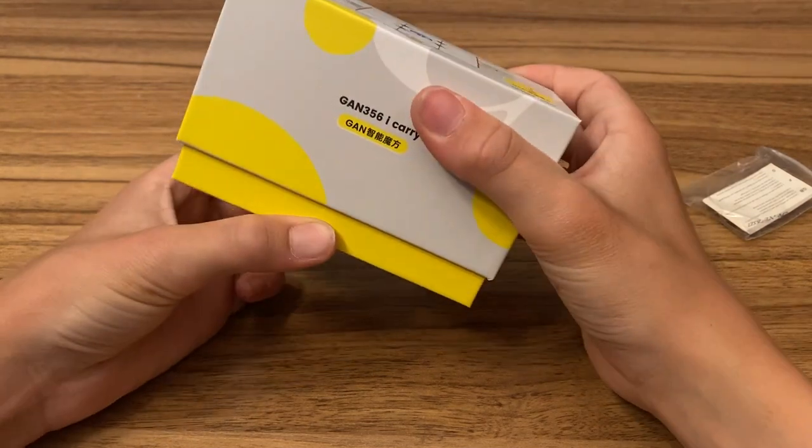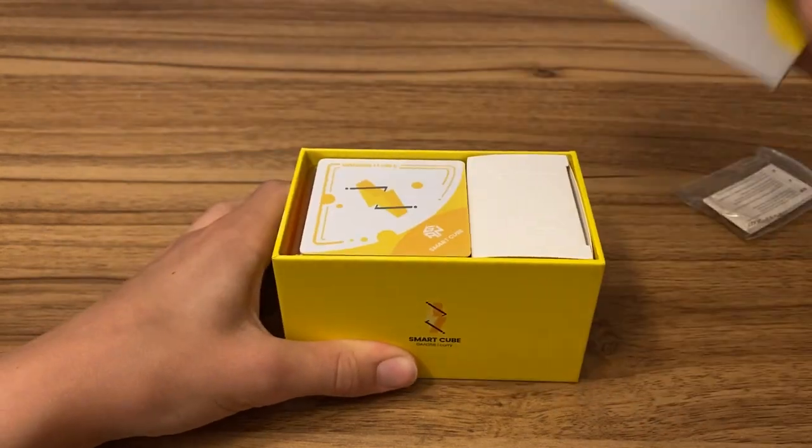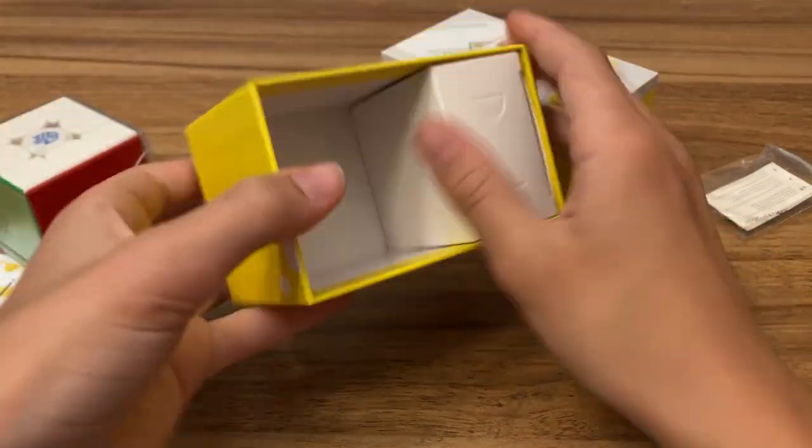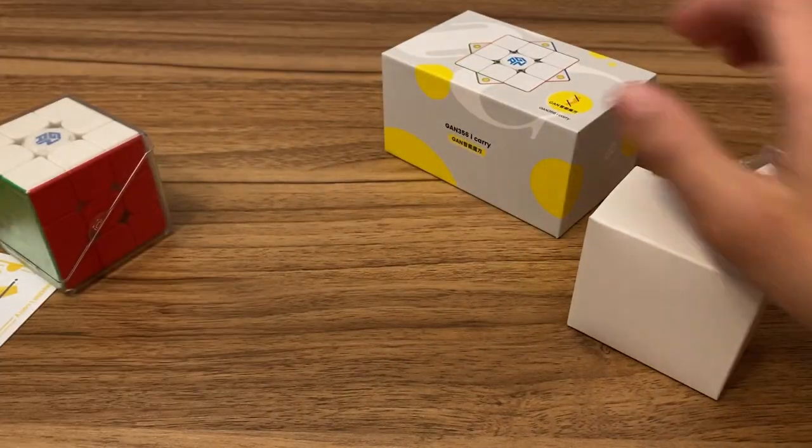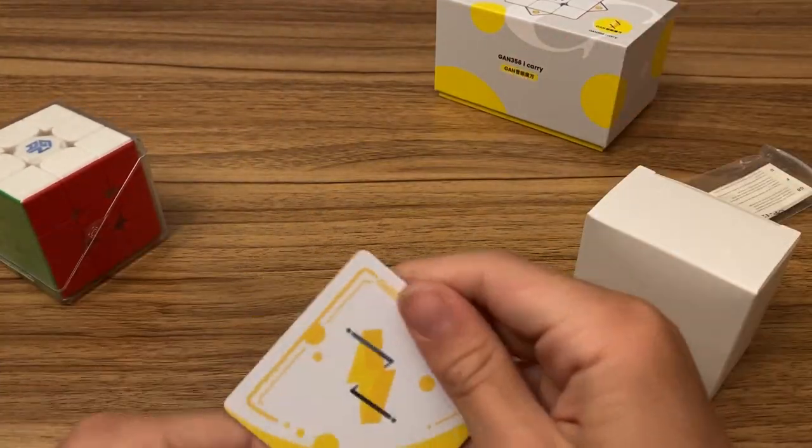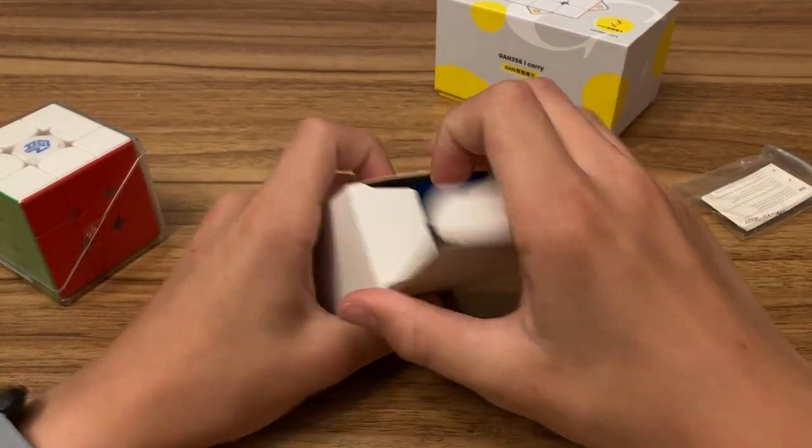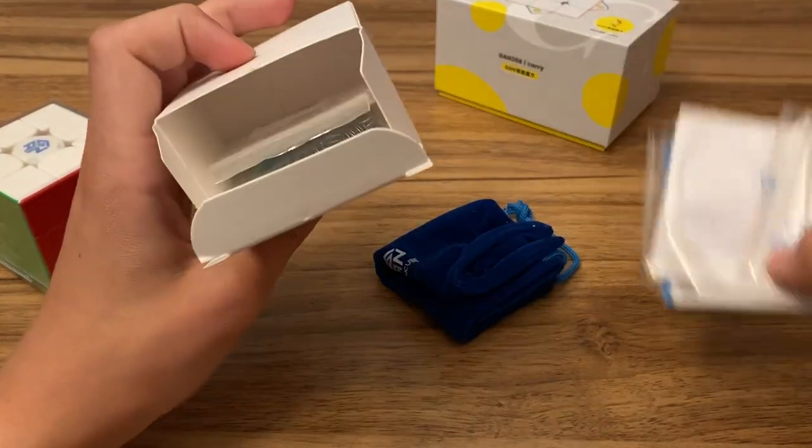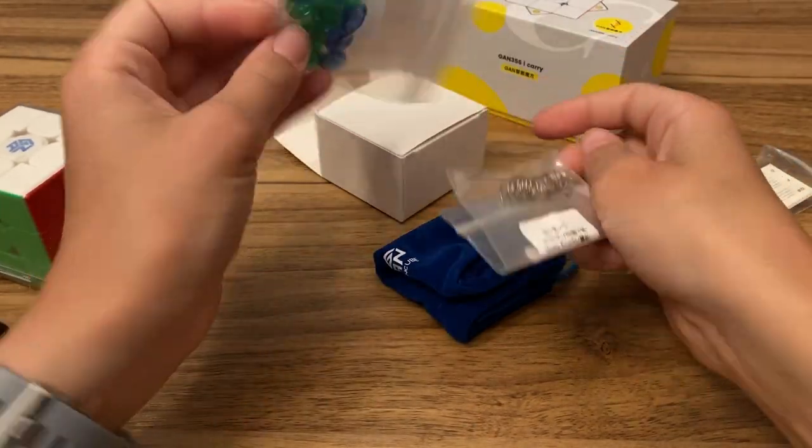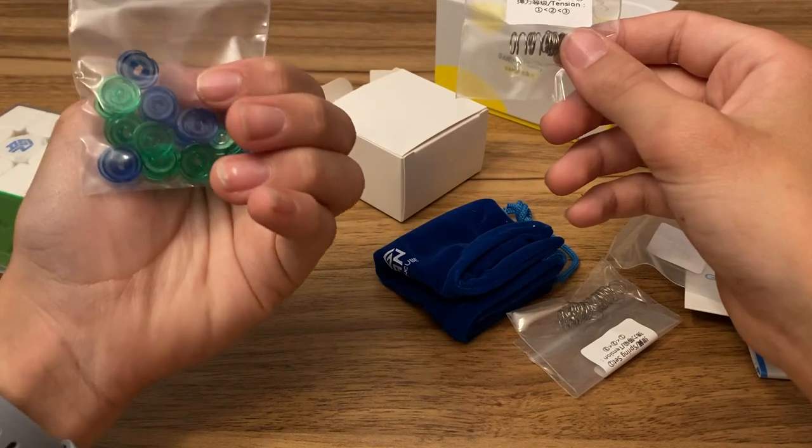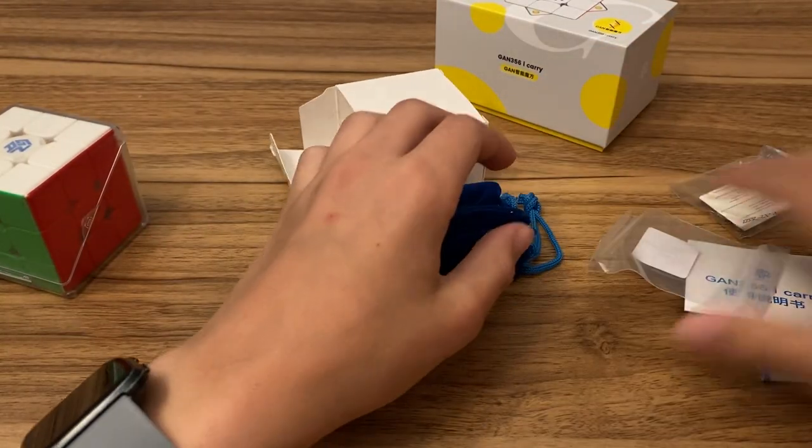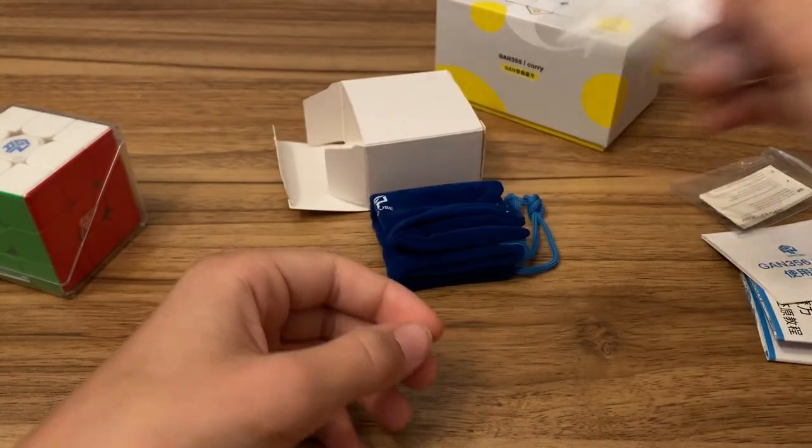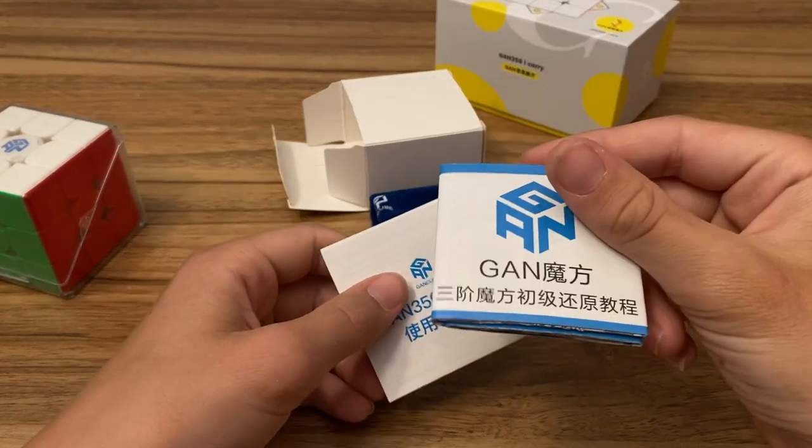So the GAN I Carry is a Bluetooth smart cube, meaning you can connect it to your phone and timer, solve via that, and also play online with other people. Let's look into this. First things, there's this card and we got a GAN cube badge. I'll add that to my collection. Looks like we got some extra spring sets and I think those are GES nuts, and then an empty bag for the preset springs on the cube, and then an instruction manual.